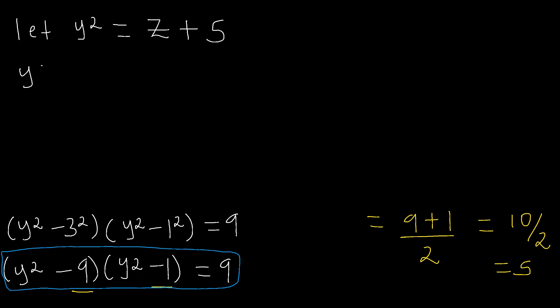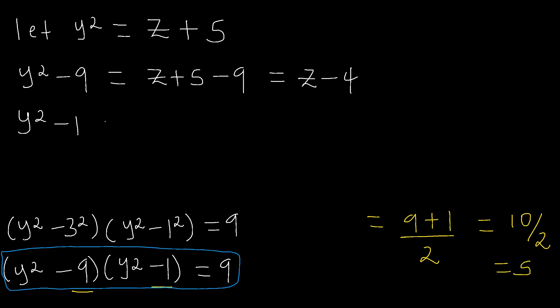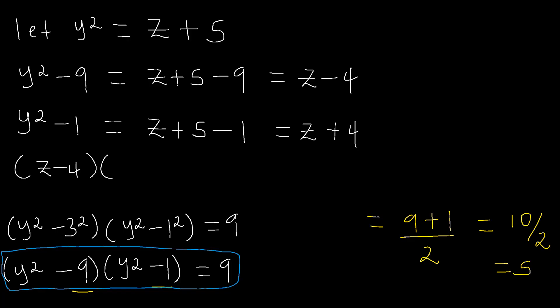So we shall have y squared minus 9, and this will be equal to — if we replace y squared with z plus 5 — we shall have z plus 5 minus 9, which gives z minus 4. And then for y squared minus 1, we shall have z plus 5 minus 1, which equals z plus 4. Therefore, our equation will become (z minus 4) times (z plus 4) equals 9.